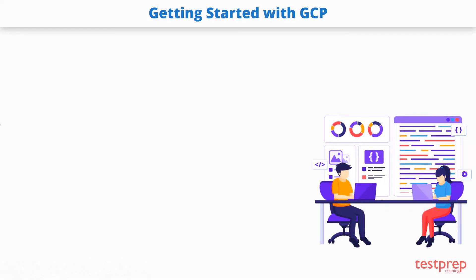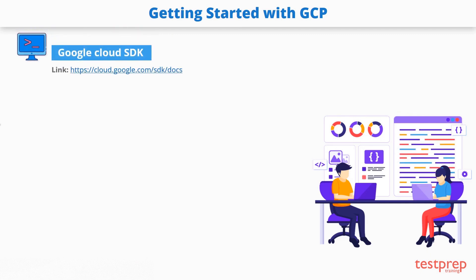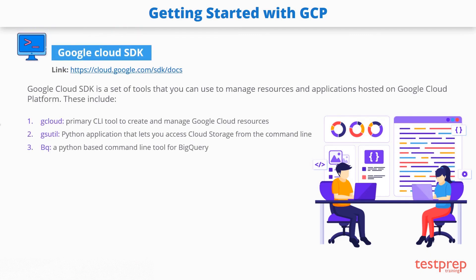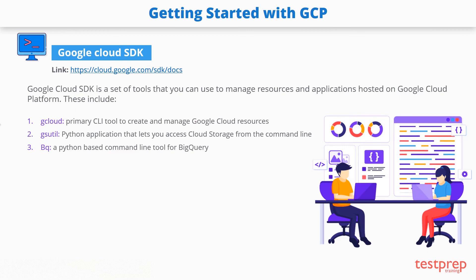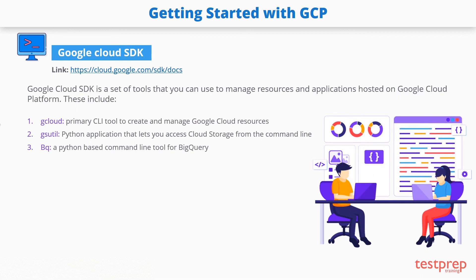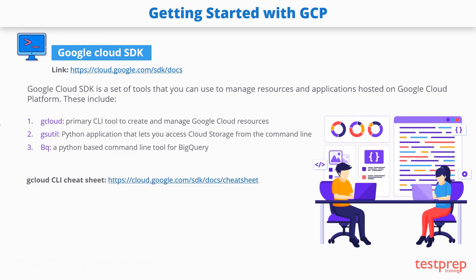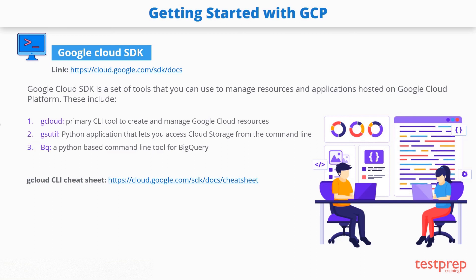To interact with Google Cloud Platform using a command line, you can install the Google Cloud SDK. Google Cloud SDK is a set of tools that you can use to manage resources and applications hosted on Google Cloud Platform. You can download the Google Cloud SDK from the link shown in the video, also provided in the video description. You can also check out the cheat sheet for the command line from the link given in the video and in the description as well.